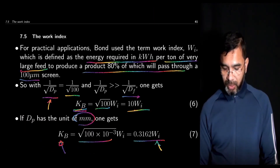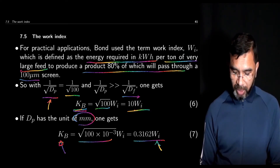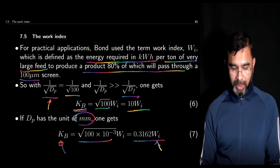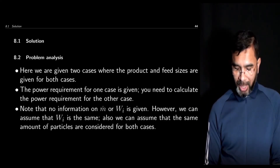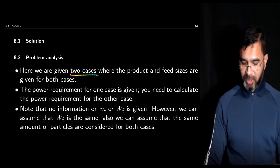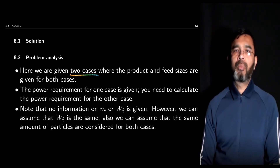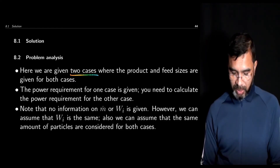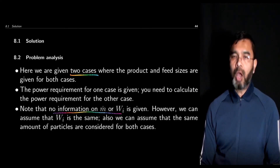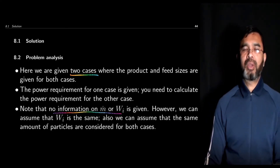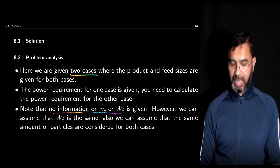Analyzing the problem: we are given two cases where product and feed sizes are specified for both; both cases use the same feed. The required product sizes differ. We are given the power requirement for one case and need to estimate power for the other. We have no information on mass rate or work index. However, we can assume the work index is the same for both cases because it depends on the mill and materials — if operating conditions remain the same, the work index is the same. We also assume the same mass feed rate applies to both cases.